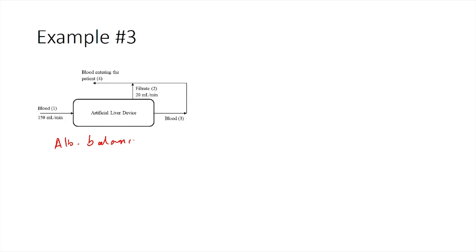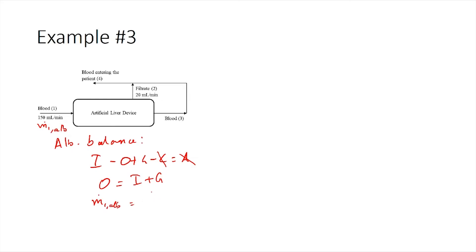Now we perform the albumin balance. The balance has the same terms: input − output + generation − consumption = accumulation; at steady state, accumulation = 0. Albumin is not consumed but is being generated at 5 grams per day, so there is no consumption term. M1_albumin = 150 ml/min × 2 micrograms/ml = 300 micrograms per minute of albumin entering the device.